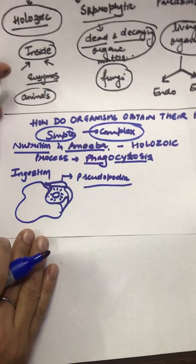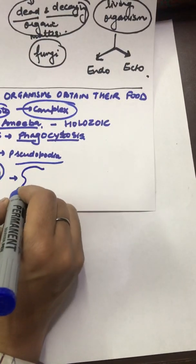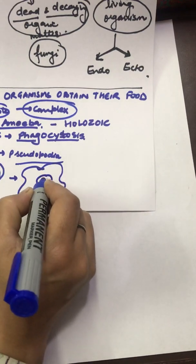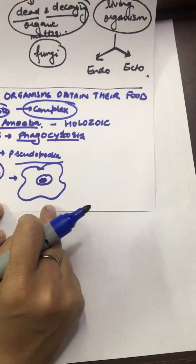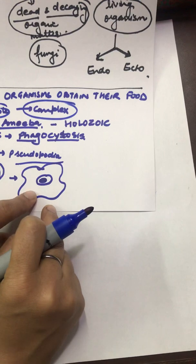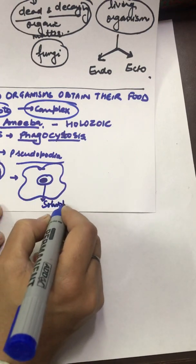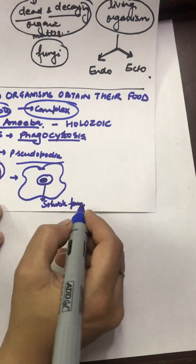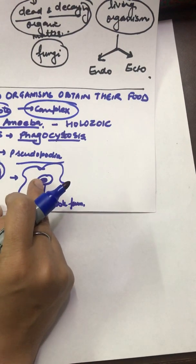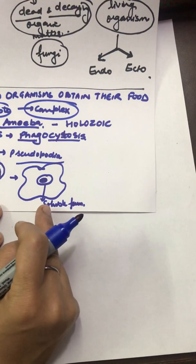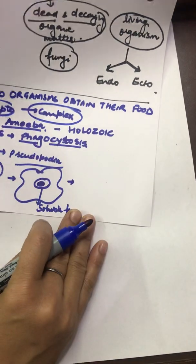After the food is taken inside the body comes digestion. The food particle has moved inside the food vacuole within the body of the amoeba. Inside the vacuole, it is acted upon by digestive enzymes and converted into its soluble form. This conversion of complex food into soluble form with the help of digestive enzymes is known as digestion.